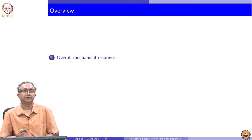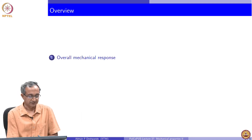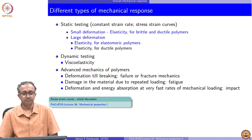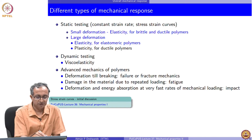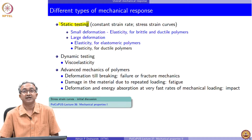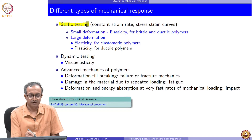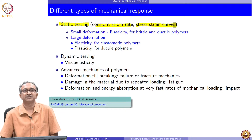A plethora of mechanical responses need to be considered when we have any of these applications. The different types of mechanical response that we normally try to characterize and assess the property of a given polymer system can be classified as follows. Quite often what we have discussed so far is really only the static testing. This is quite often done at a constant strain rate, and what we look at is basically stress-strain curves.